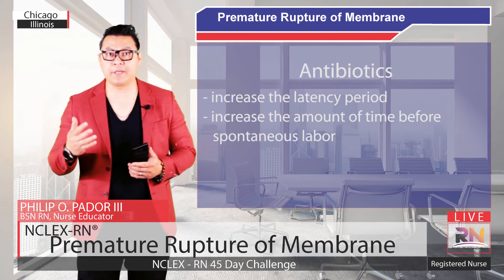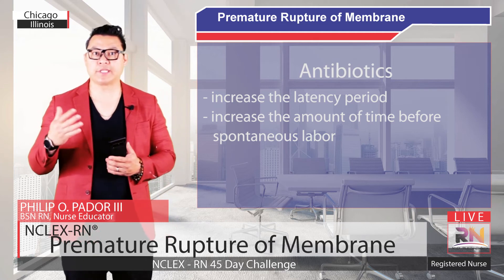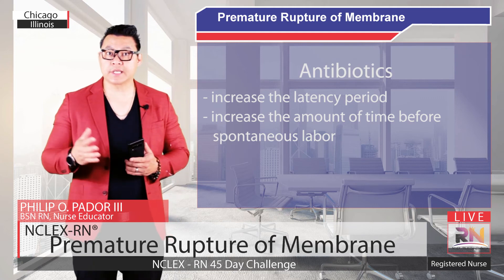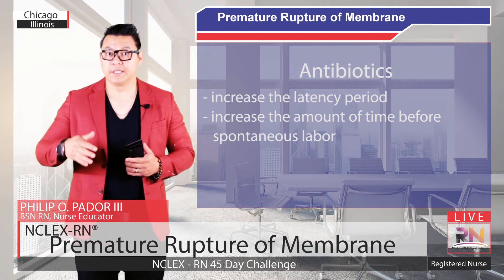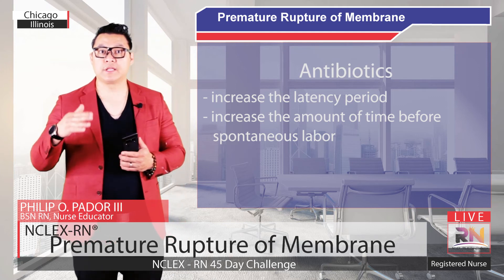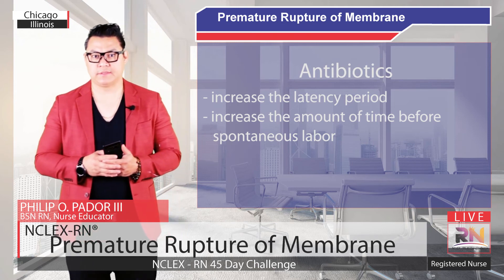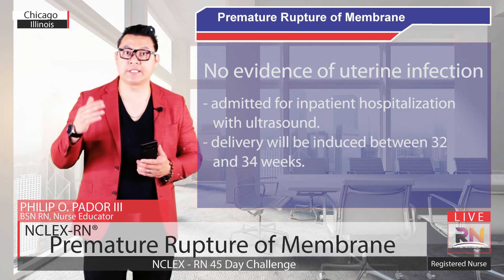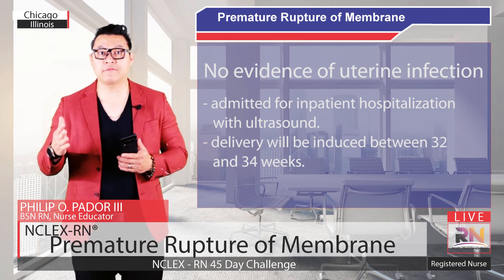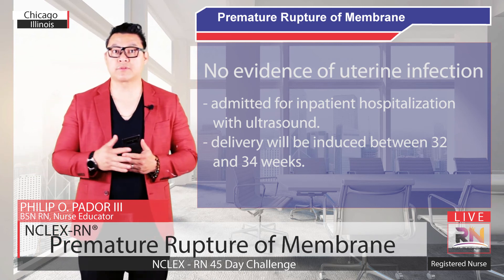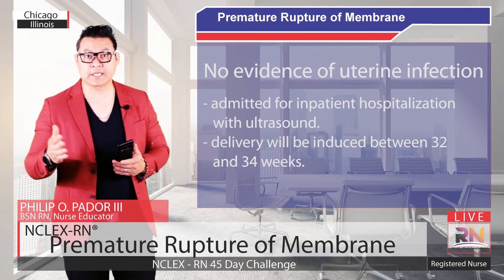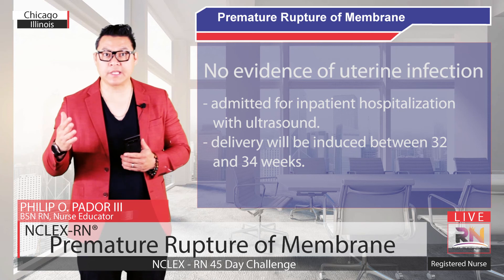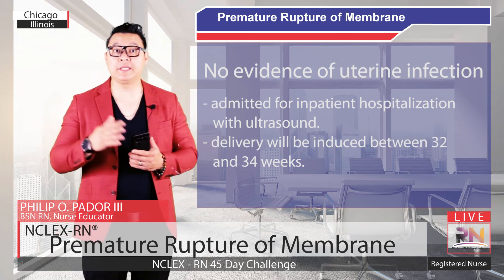Antibiotics are administered to increase the latency period, which is the time between rupture of the membranes and spontaneous labor. They have been shown to increase the amount of time before spontaneous labor occurs. The antibiotics are not to treat infection — if infection is present, diagnosed by uterine tenderness, fevers, or increased white blood cell count, delivery needs to be initiated immediately. Patients with PPROM from 24 to 33 weeks and 6 days estimated gestational age, with no evidence of uterine infection, will be admitted for inpatient hospitalization with ultrasound to assess amniotic fluid volume and antepartum testing such as non-stress tests. Delivery will be induced between 32 and 34 weeks. If the patient develops evidence of uterine infection, delivery will be immediately initiated.